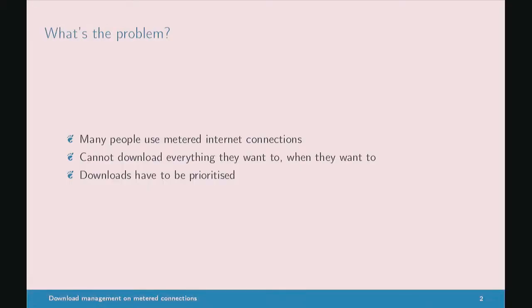The solution that we've come up with is a sort of voluntary service for software components to use. It's not like a network firewall. It's not enforced queuing. It's not a mandatory thing that applies to everything. It's a kind of opt-in service that certain applications can use to query whether they should do a download and when.